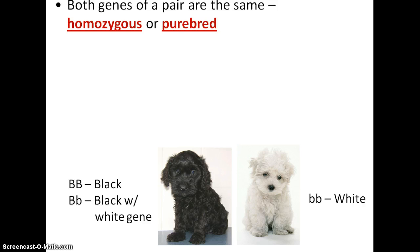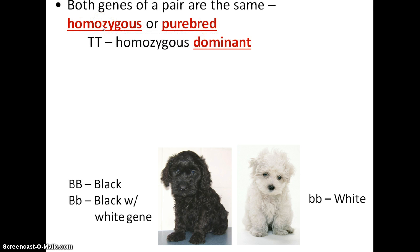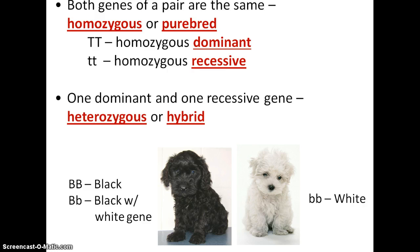If both alleles of a pair are the same — either both dominant or both recessive — we say you're homozygous or purebred. Remember, homo means same. So you could be homozygous dominant or homozygous recessive. However, if you have one dominant and one recessive gene, we say you're heterozygous — you might also call these individuals hybrids. Remember, hetero means other.